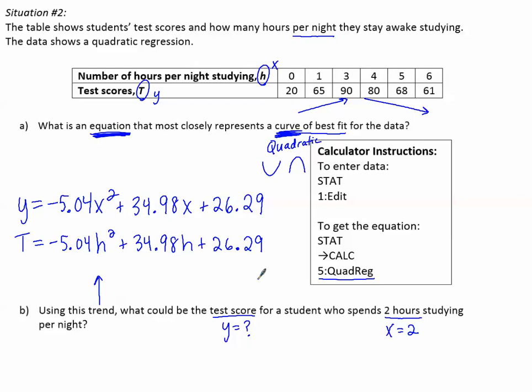Let's go ahead and plug in the two into where the x is in our equation, or where the h is, and that will give us the test score. t equals -5.04, instead of h or x, we'll put 2 squared, plus 34.98 times 2 instead of h, and plus 26.29.